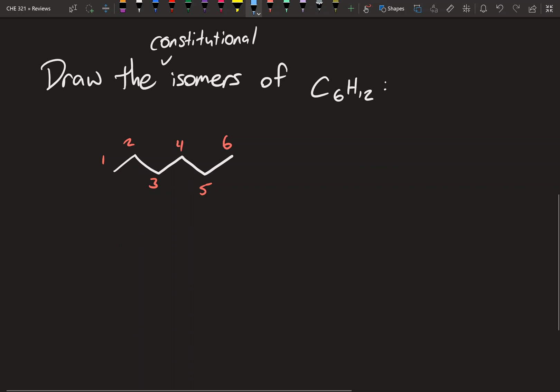So once we have our carbons, let's look at our hydrogens to make sure everything's good in that department. We have 1, 2, 3, 4, 5, 6, 7, 8, 9, 10, 11, 12, 13, 14. All right, so our formula is C6H14.